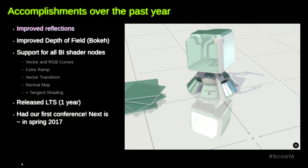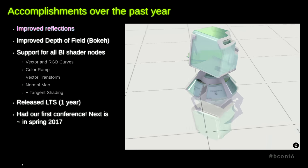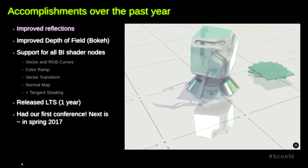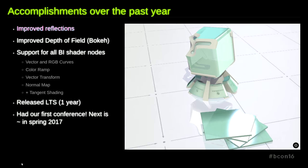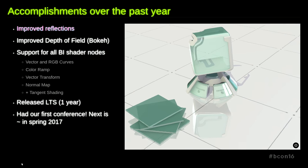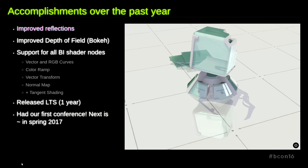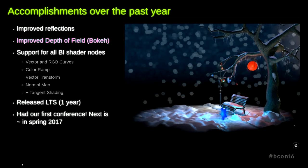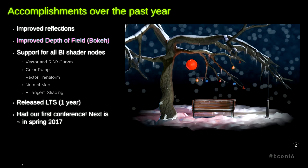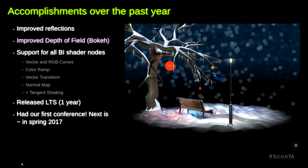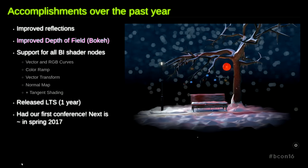Now I would like to show you how fast Blend4Web is developing. We have improved reflections — before, only opaque materials could be reflected, and now you can see that transparent materials can also be reflected. We have also improved our depth of field effect and added bokeh effect, which you already saw in the umbrella example — and here is just another one.